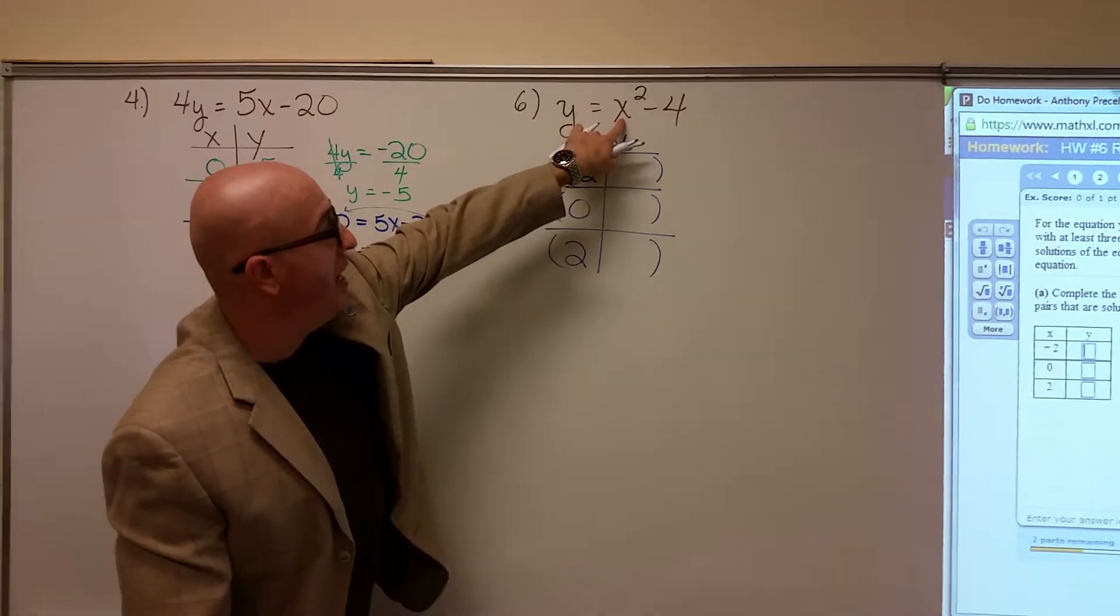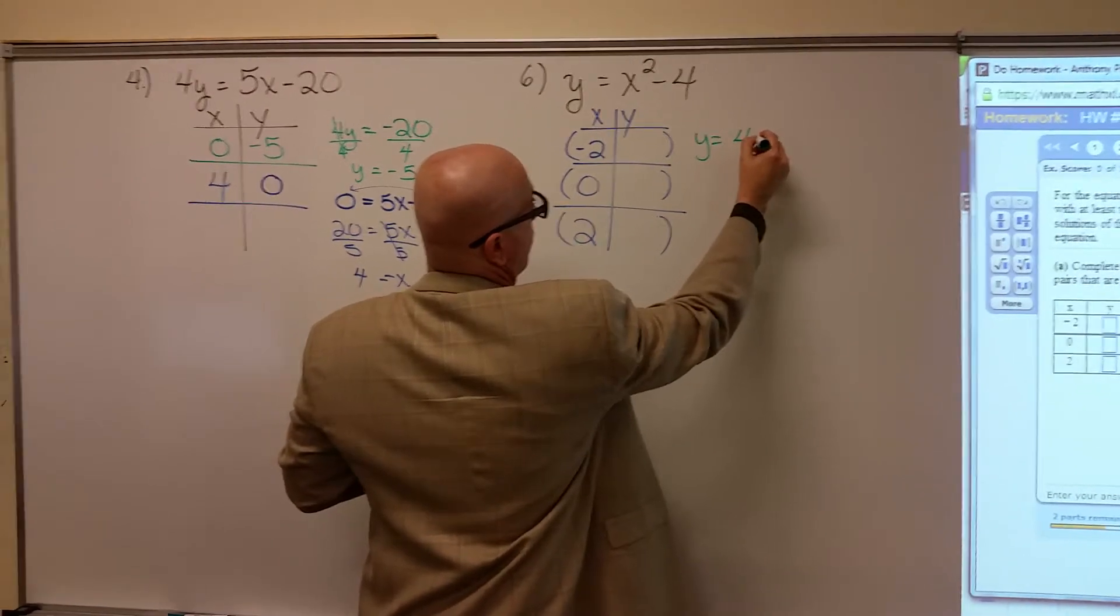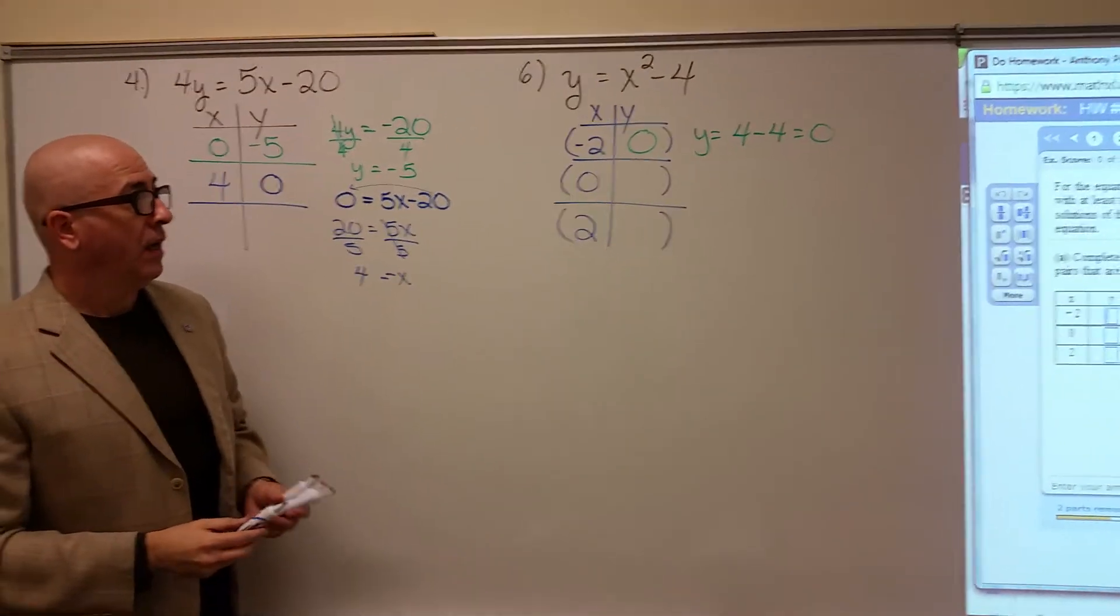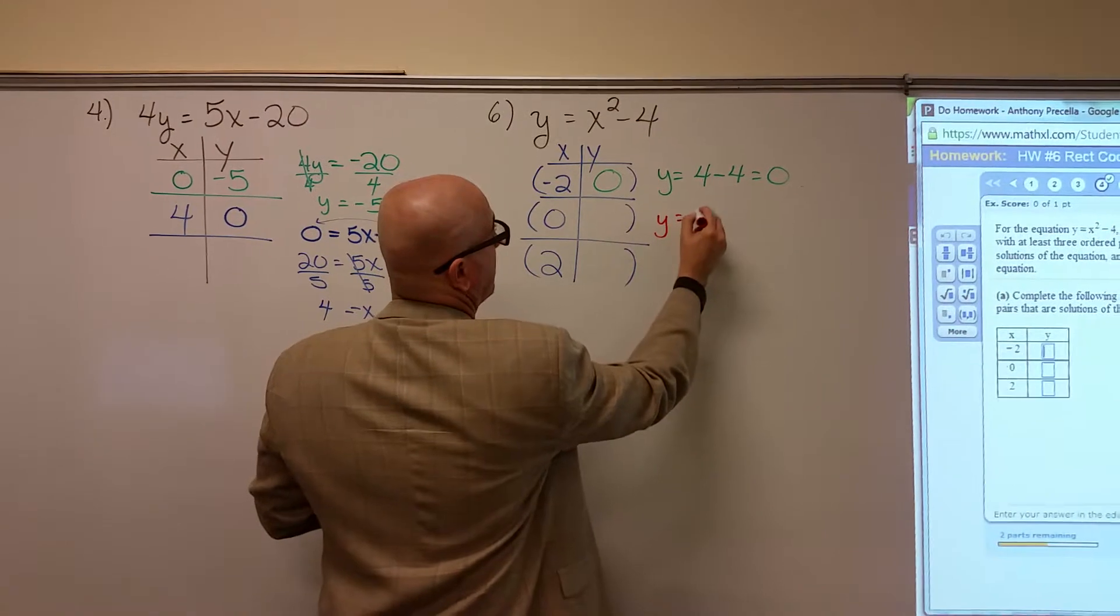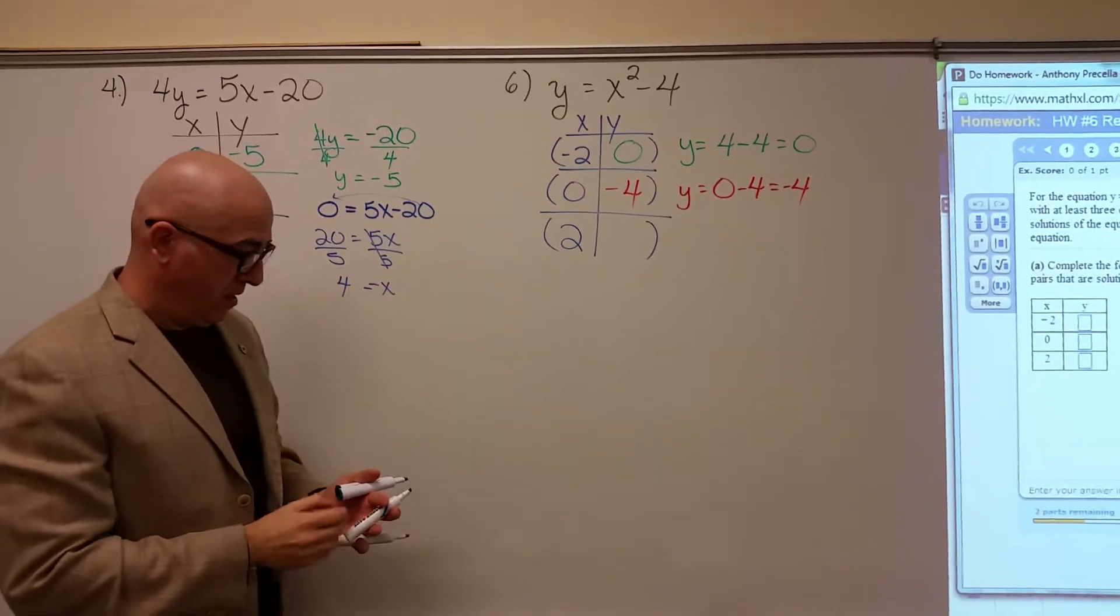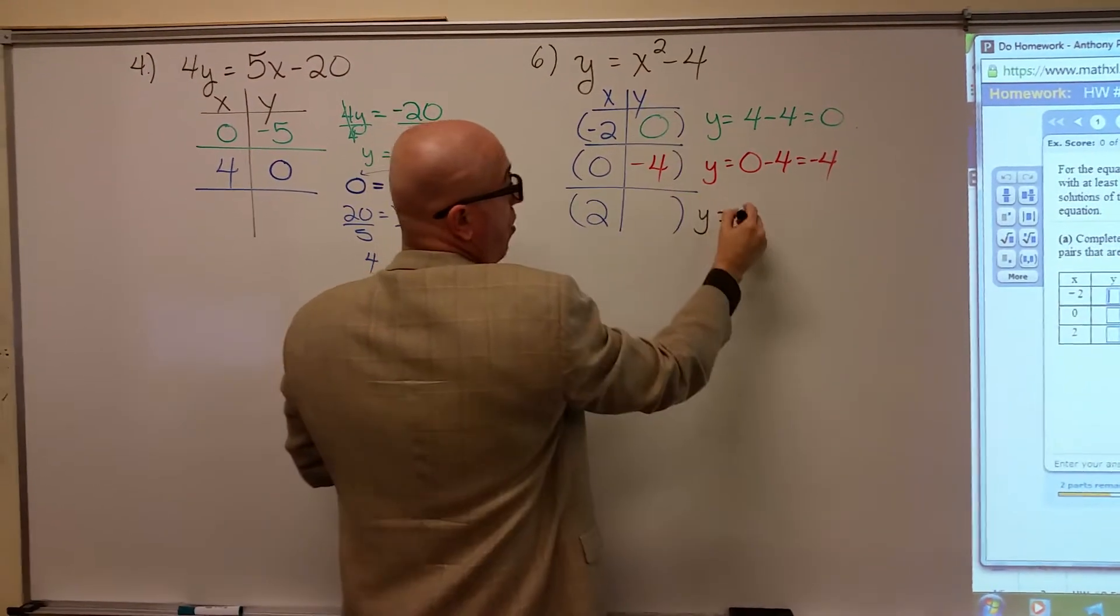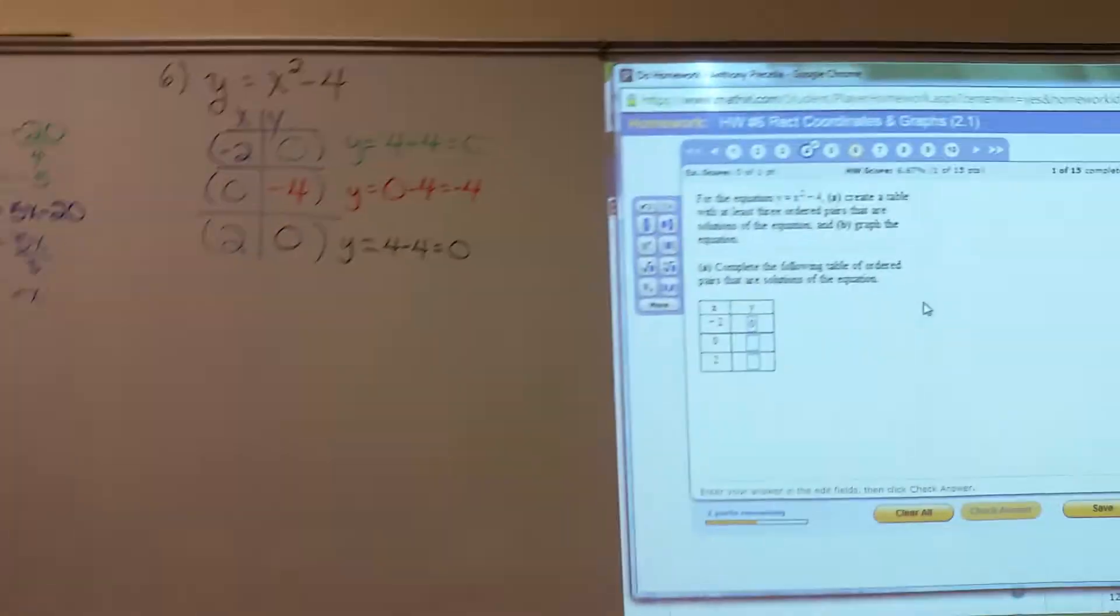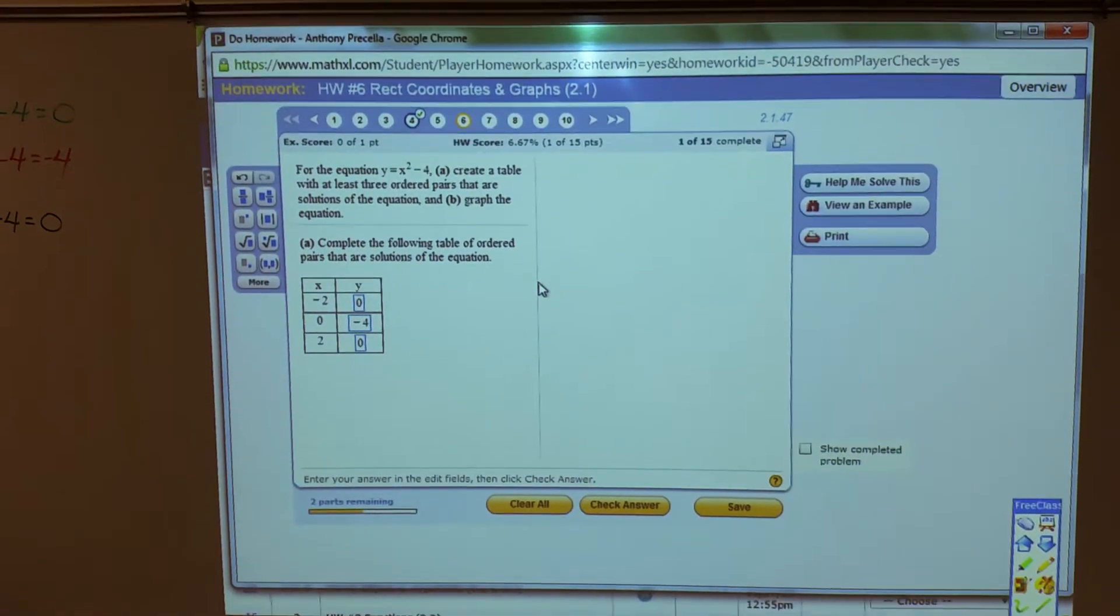So this is number six. Y equals x squared minus four. We're going to fill in this table. Notice we're given values for x. Plug a negative two in for x, a zero, and a positive two. If we plug a negative two in for x, negative two times negative two would be positive four, minus four is zero. Now we plug a zero in for x. Zero squared is zero, minus four is negative four. And finally plug a positive two in for x. Two squared is four, minus four is zero. Plug these numbers in.